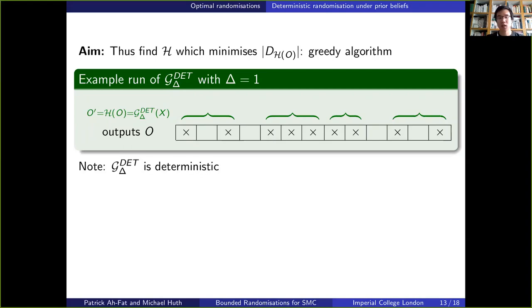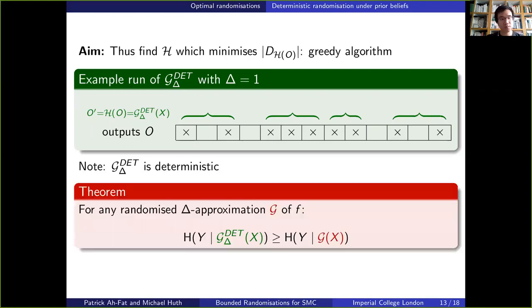We notice that this algorithm is deterministic, but we can show that this algorithm is the best randomized delta approximation of f that we can find under these assumptions.